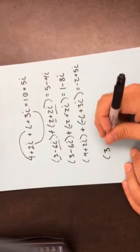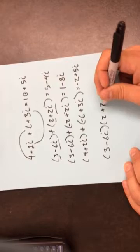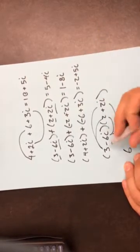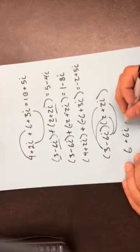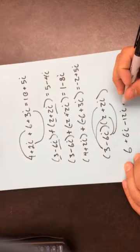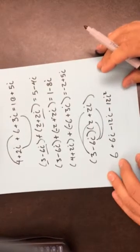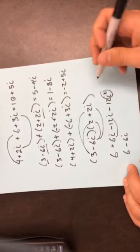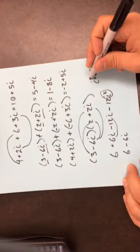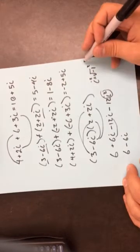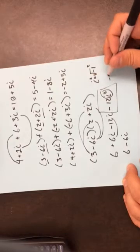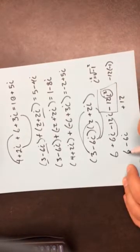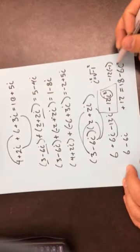Now with multiplication, you do something slightly different. We're going to foil this out. 3 times 2 is 6. 3 times 2i is 6i. Negative 6i times 2 is negative 12i. Negative 6i times 2i is negative 12i squared. Remember that i equals the square root of negative 1, so if you square that, the square root cancels out, making i squared equal to negative 1. So negative 12i squared is the same as negative 12 times negative 1, which is plus 12. Then 6 plus 12 is 18, minus 6i is the final answer.